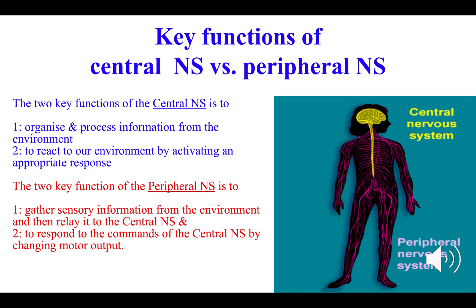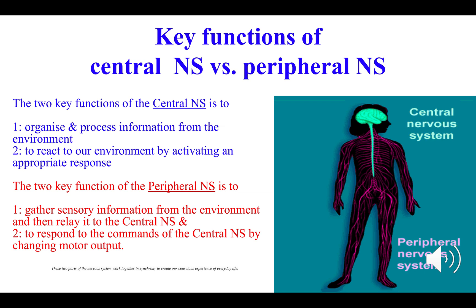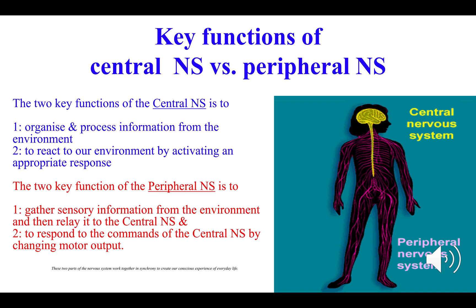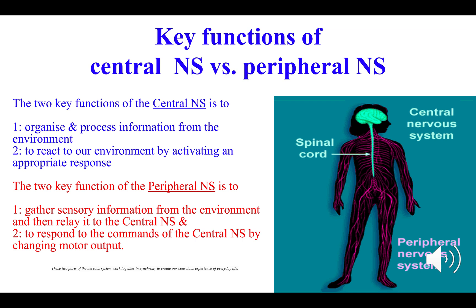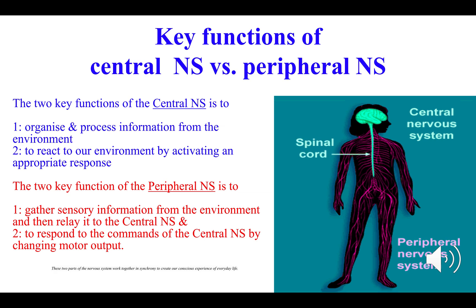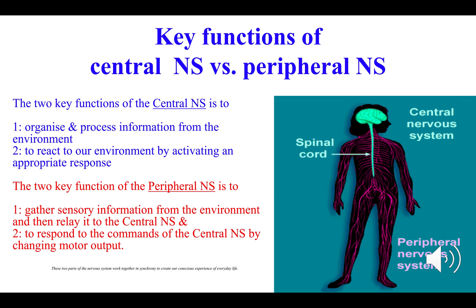In terms of the third objective — the interdependence of the two major divisions — the central nervous system's job is to activate a response, and it's the peripheral nervous system's job to execute that change. The peripheral nervous system needs to detect sensory information, and the central nervous system needs to process it. The two major divisions are always working together, often autonomously, in order to maintain our survival and our conscious experience in everyday life.